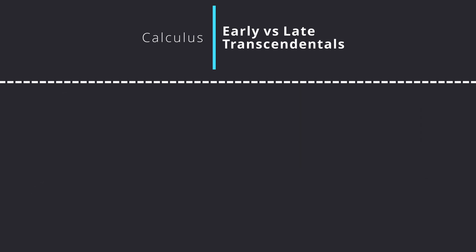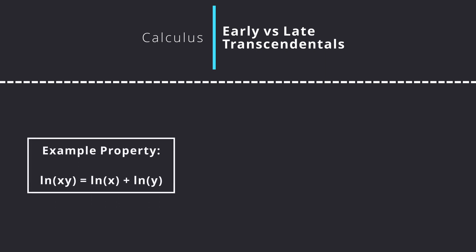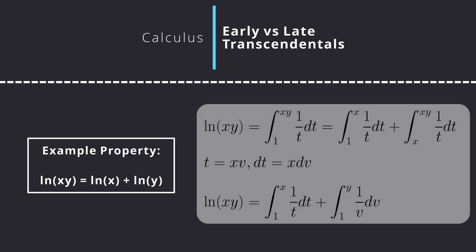Now, a step forward into the differences of defining the properties of the logarithm. In late transcendentals, a typical result such as ln(xy) = ln x + ln y is proven by means of u-substitution into the integral definition. Suppose ln(xy) equals the integral from 1 to xy of 1 over t dt. This can be split into the integral from 1 to x of 1 over t dt, plus the integral from x to xy of 1 over t dt.